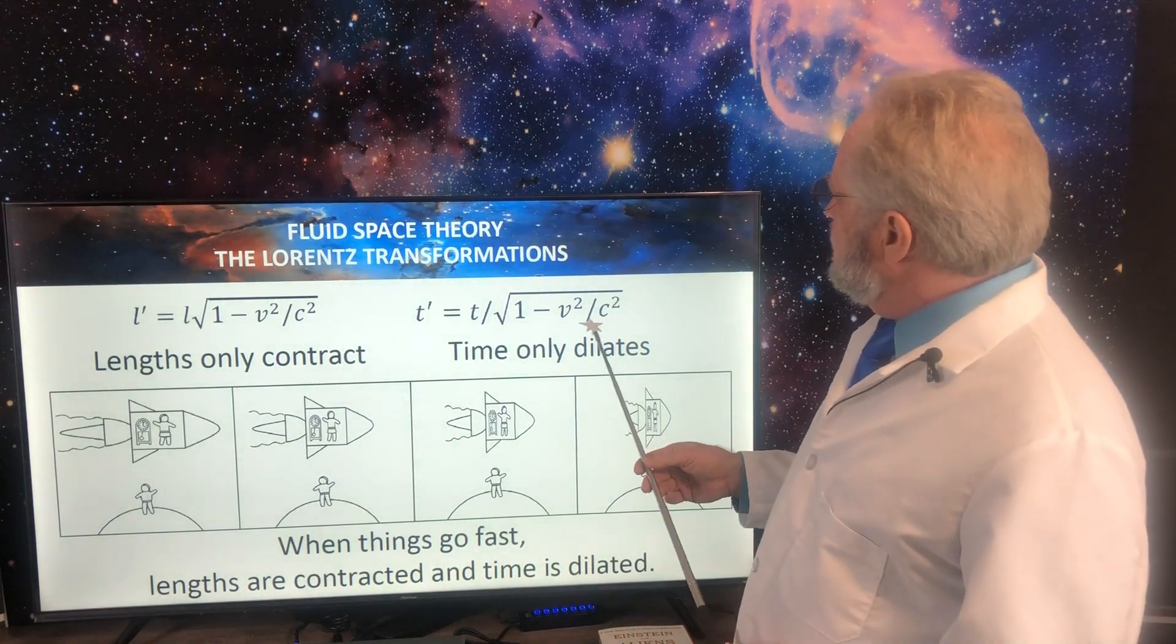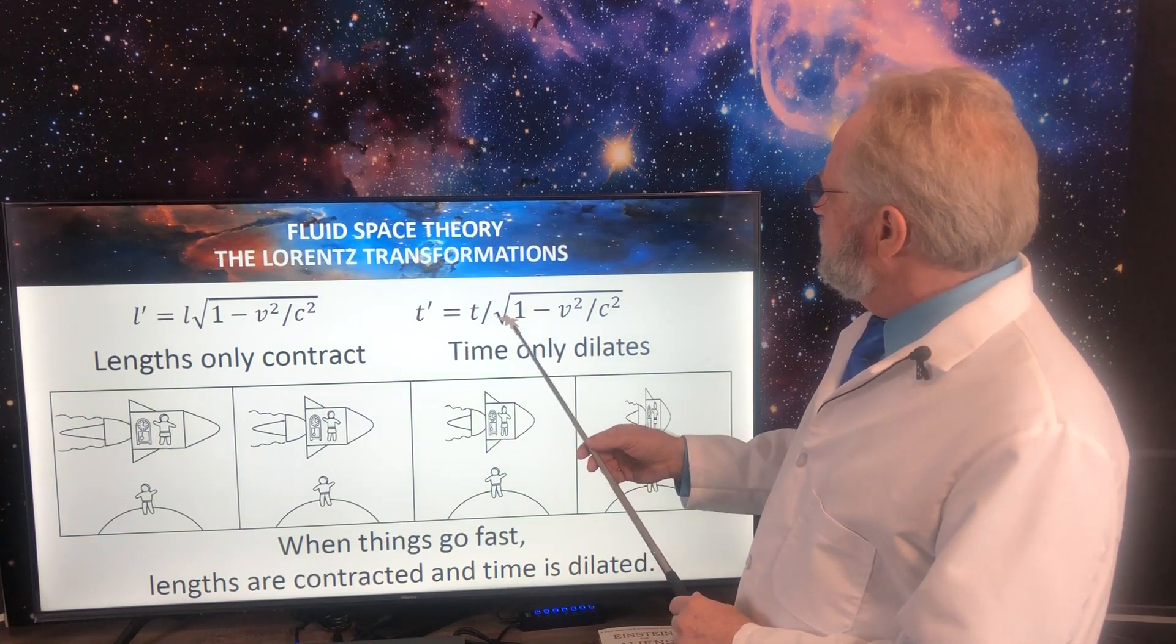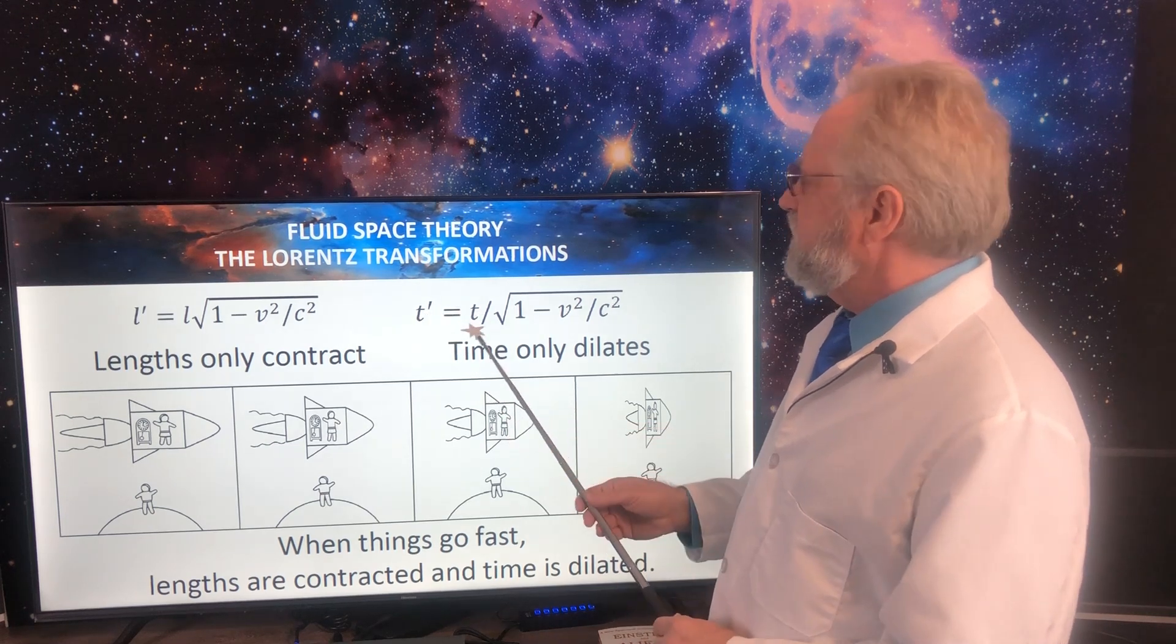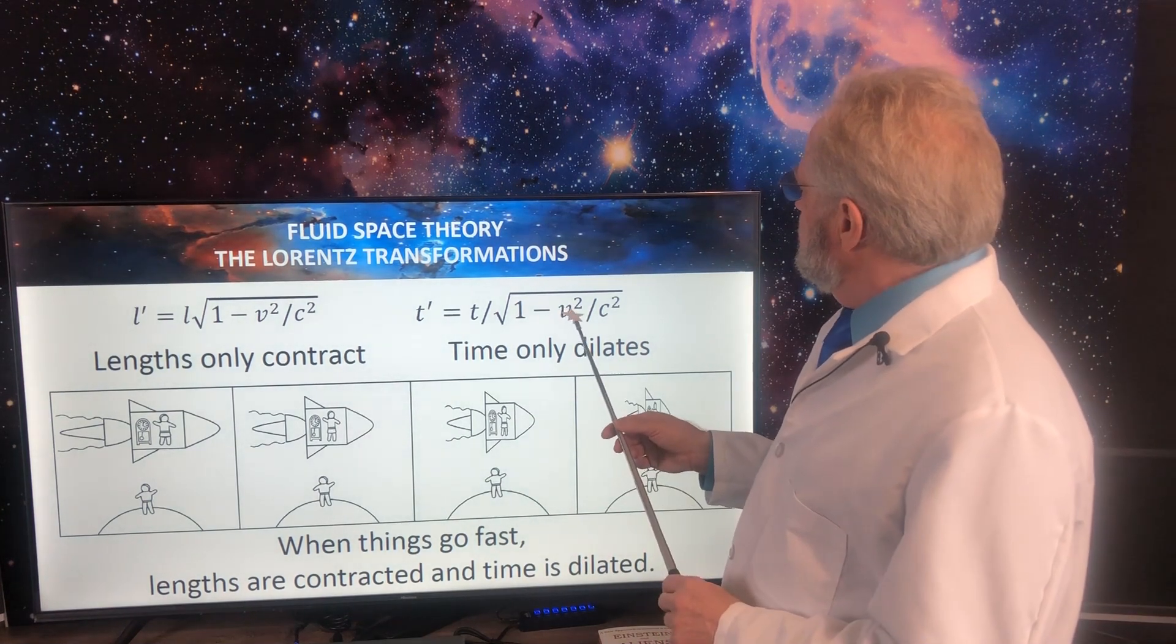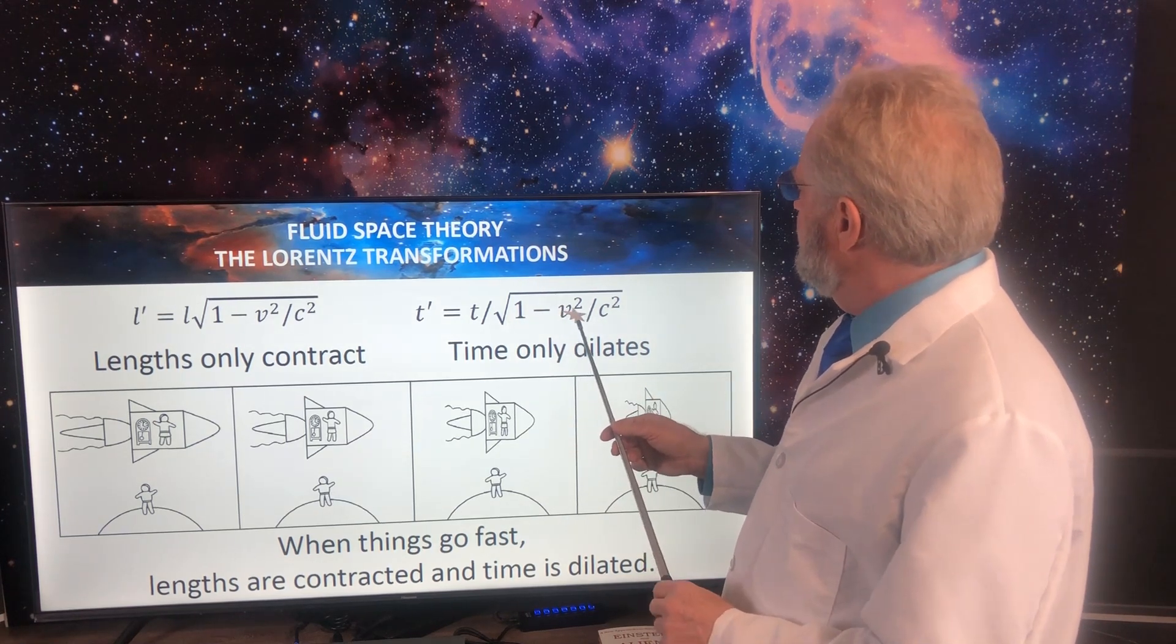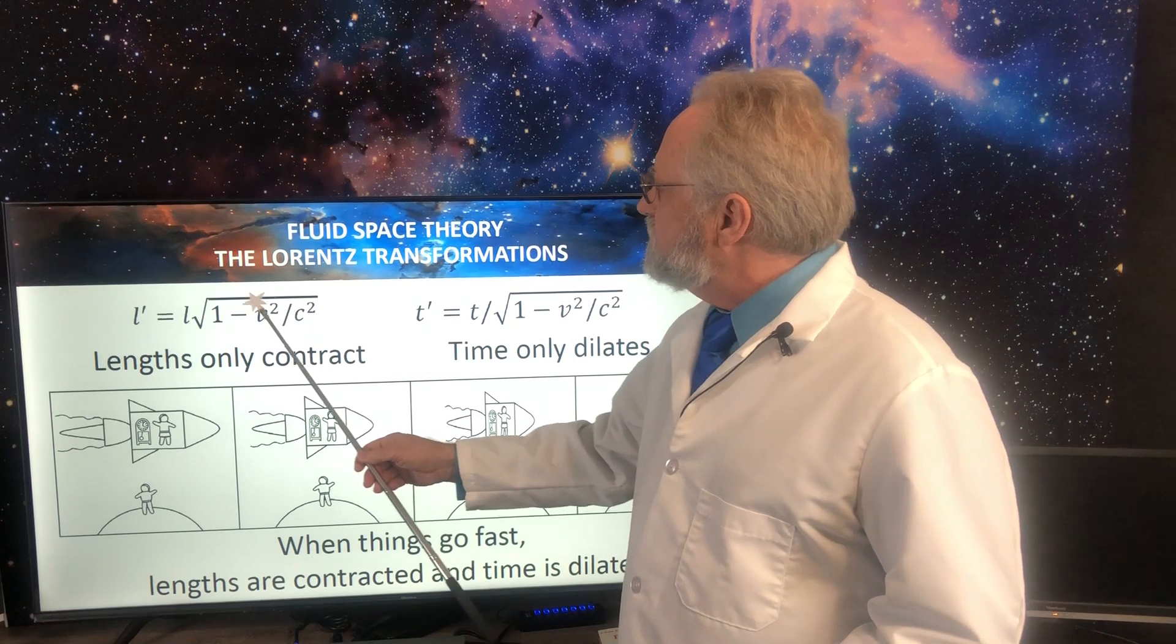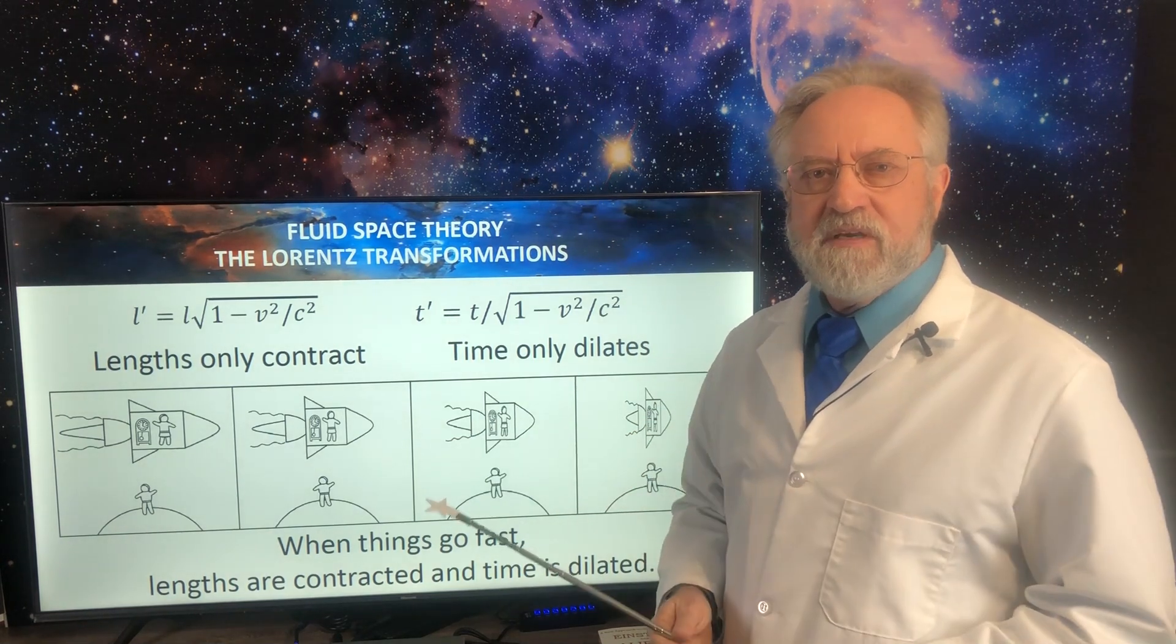And the same thing is going on with time, except when we deal with time, the term with the radical is in the denominator, which means the seconds grow longer in the moving reference frame, while lengths grow shorter. So if V is 0, then the two terms are equal. Then you have the square root of 1, and if V equals C, then this becomes 0. So the length of the second would become infinite. And if V equals C, this term becomes 0. And the length of the moving object will be contracted down to nothing. It will become 0.